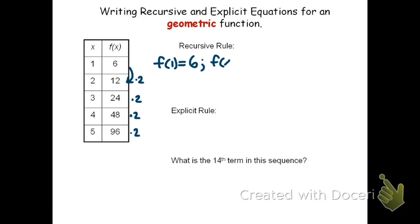Then, for the recursive rule, we needed to say how any term, which we call f of x, relates to the previous term, which we'll call f of x minus 1. Now in this table, we noticed that it had a constant factor of 2. So I'll say that it is the previous number times 2. This could also be rewritten as 2 times the previous number.